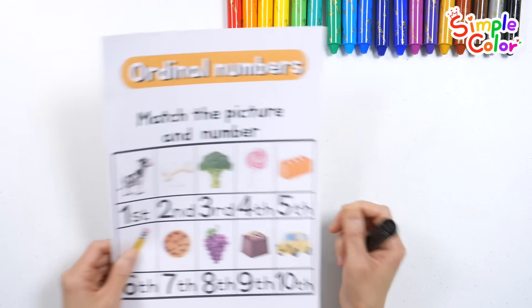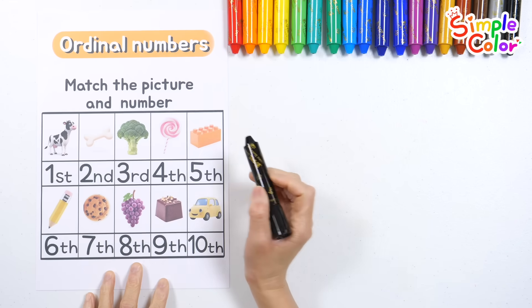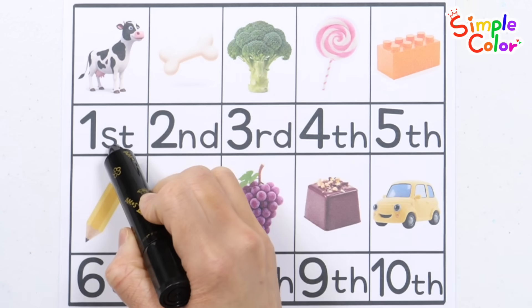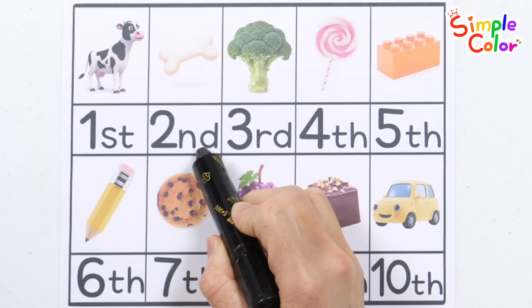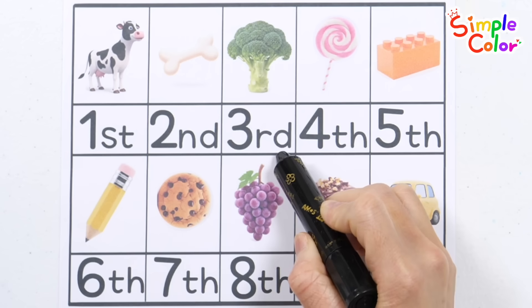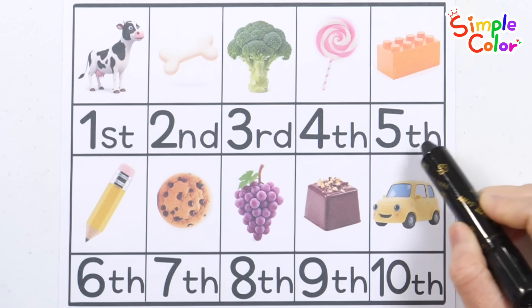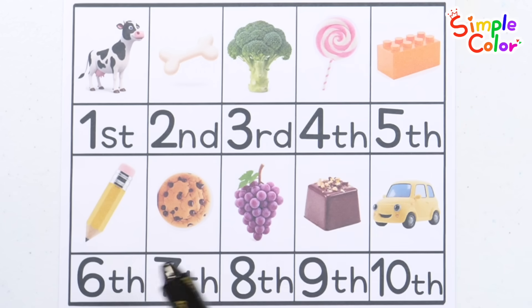Let's point to each picture and read the ordinals. First. Second. Third. Fourth. Fifth. Sixth. Seventh. Eighth. Ninth. Tenth. Well done!